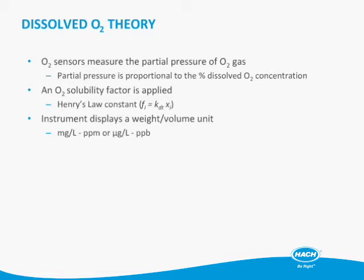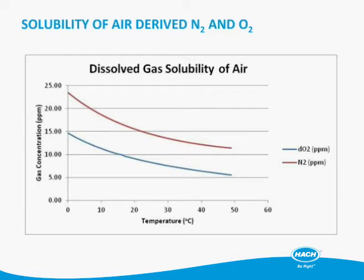Solubility of oxygen in different types of liquid changes, so we have to take that percent O2 and apply a solubility factor. Then we take that value and look at it in terms of a weight per volume unit — milligrams per liter, also called parts per million, or micrograms per liter, also called parts per billion.